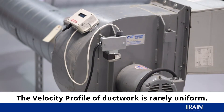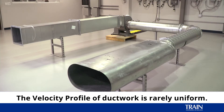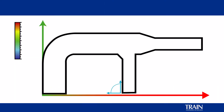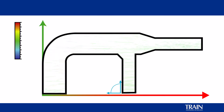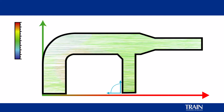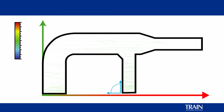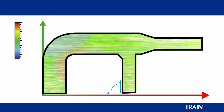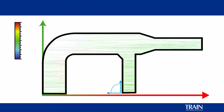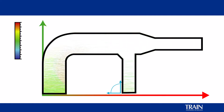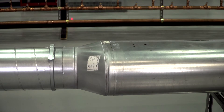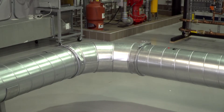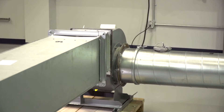Let's talk about velocity profiles in ductwork. Rarely is a velocity profile uniform in the ductwork. Typically, as the air flow flows through the ductwork, it has higher velocity in the center and lower velocity at the edges due to friction. There are quite a few things that can change the characteristics of the velocity profile, including duct transitions, elbows, and proximity to fan inlets and discharge effects.